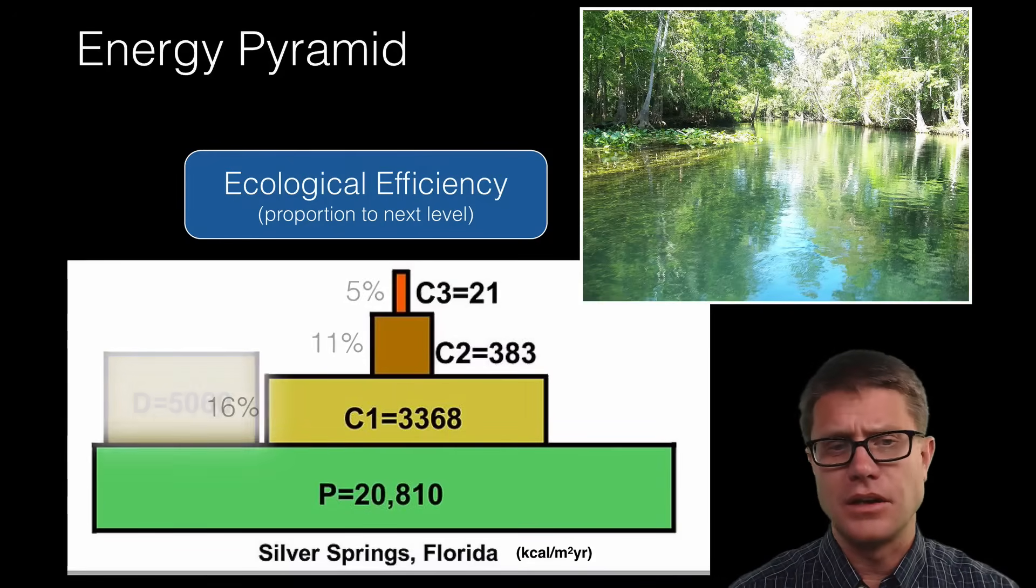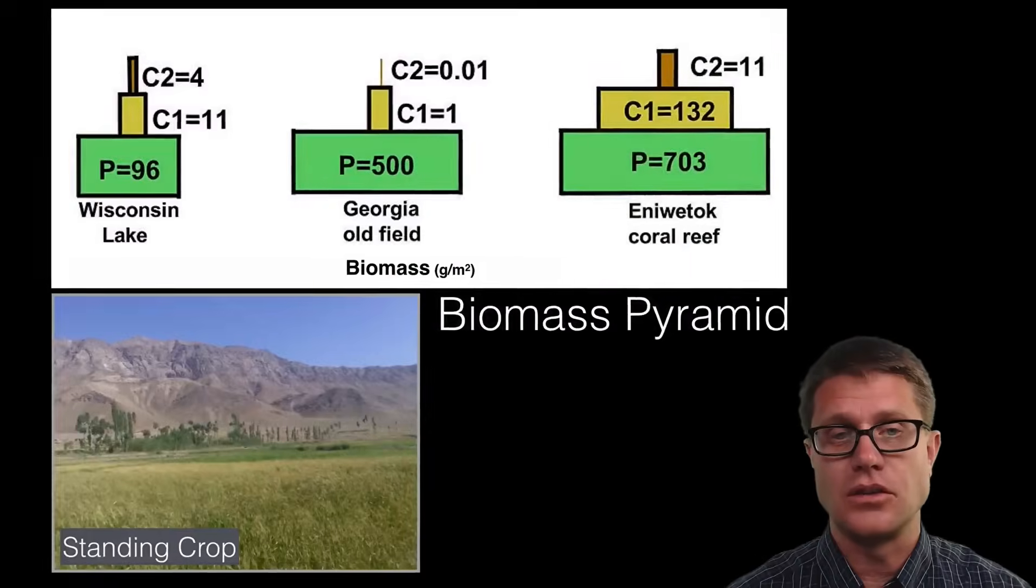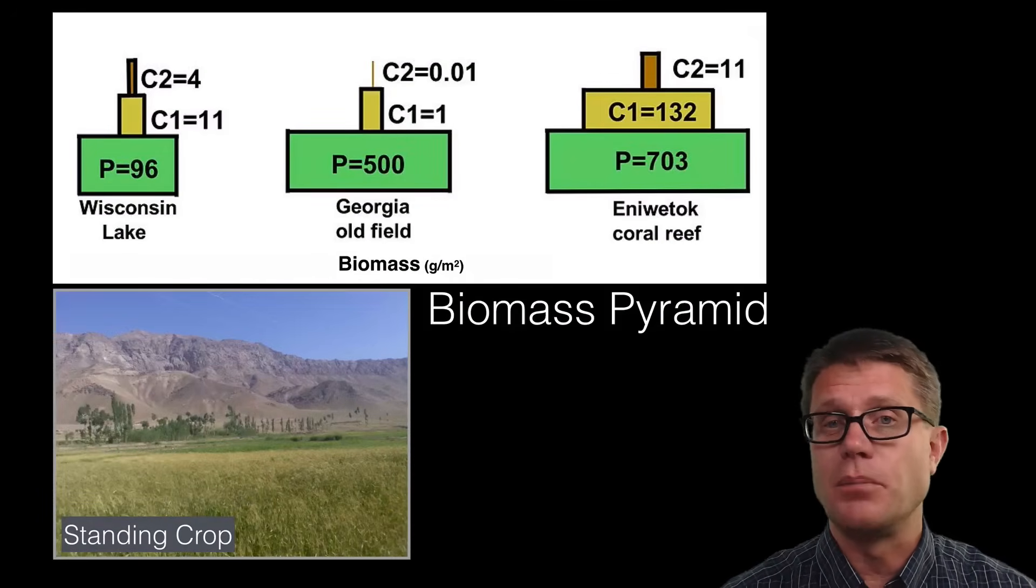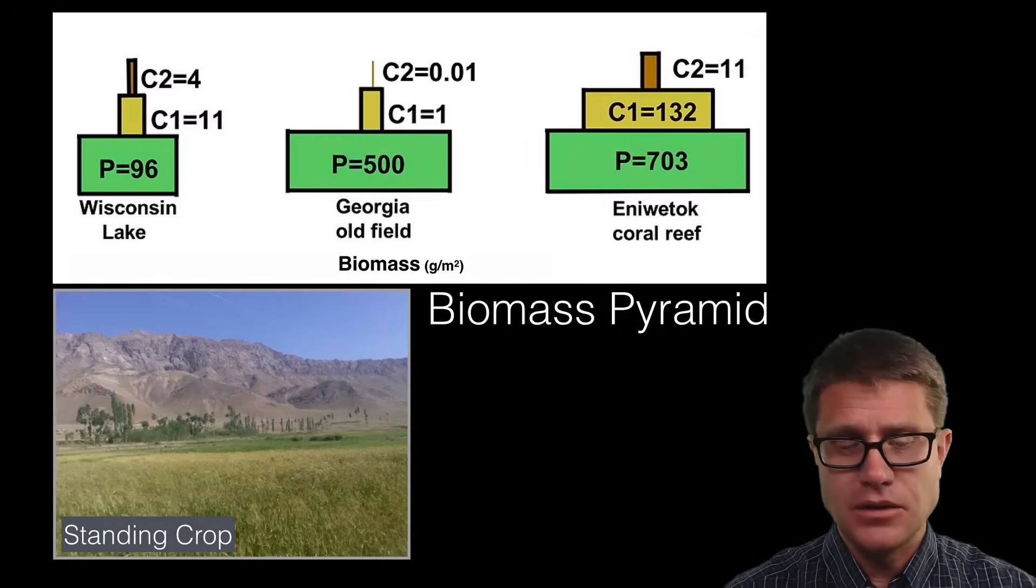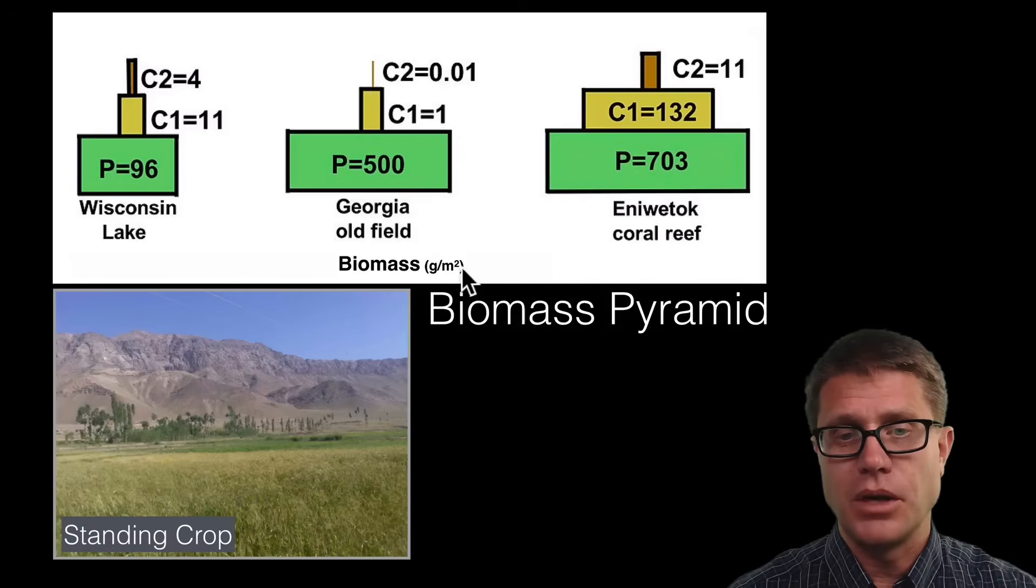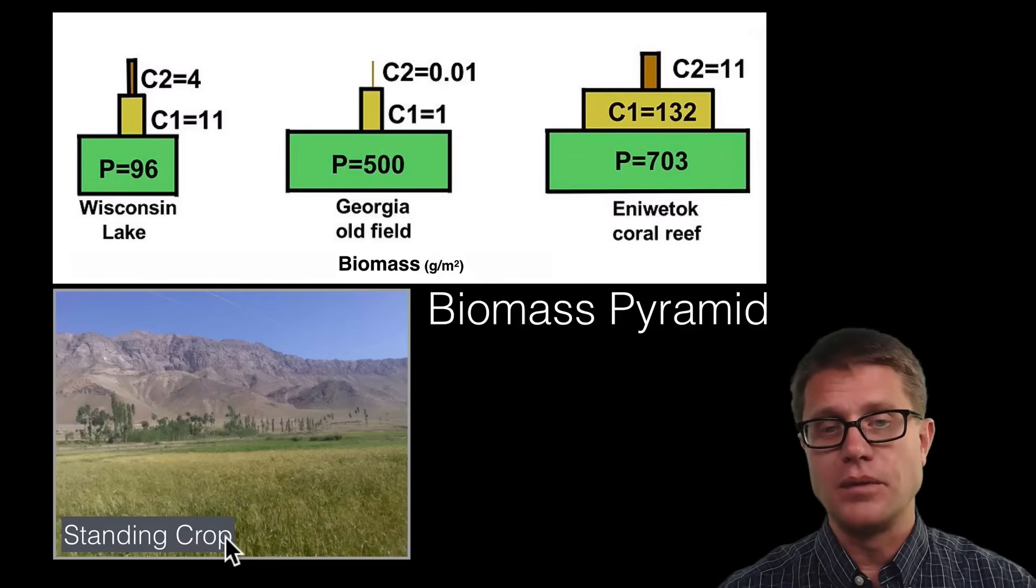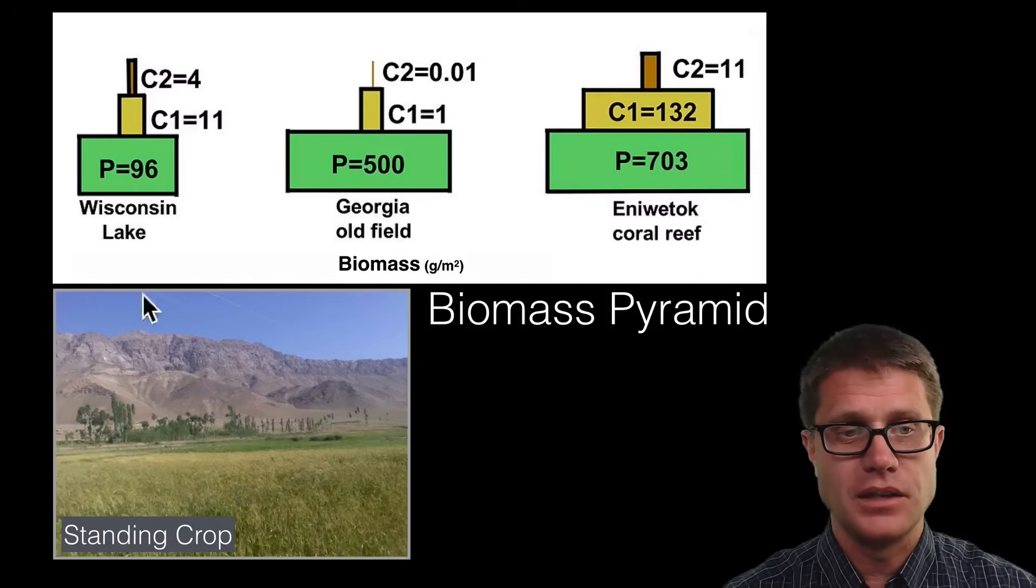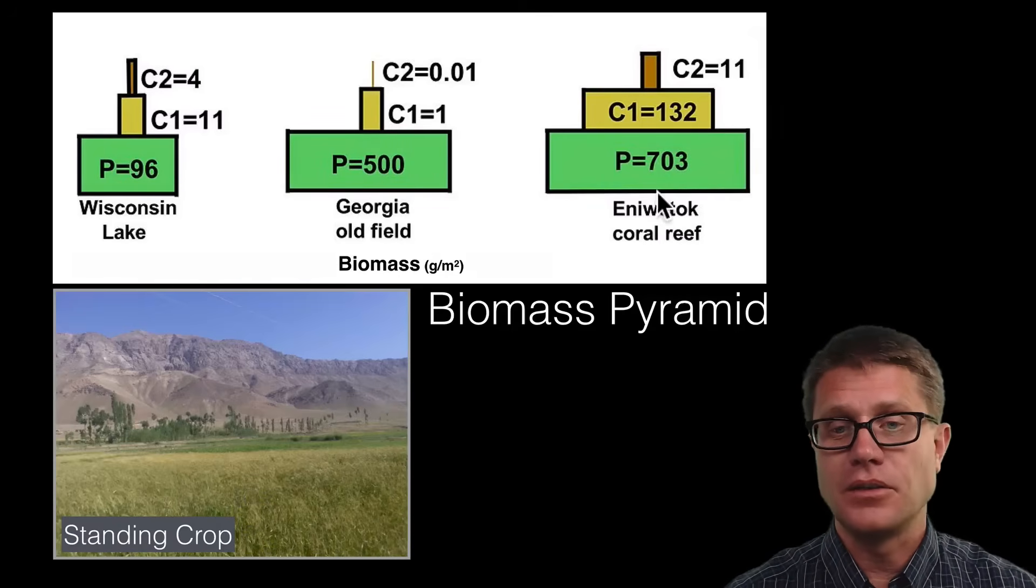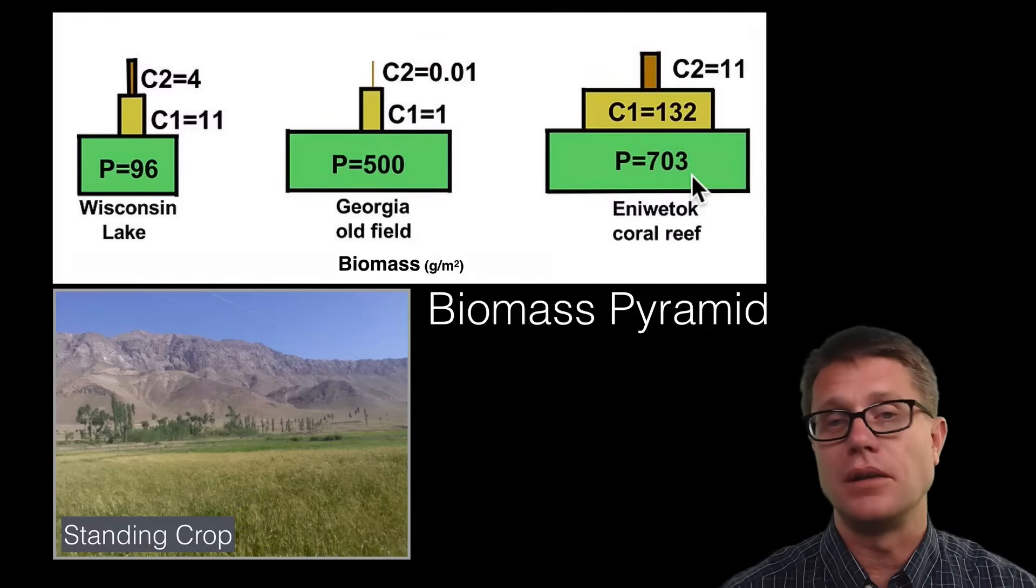Now what are we really missing on this energy diagram are the decomposers. They are going to make use of a lot of that energy as well. Another way to measure it is biomass. Just how much material is made. What is different here is that we do not measure it over a given period of time. We measure what is called standing crop. It is the amount that is there at one point in time. But you can see the same thing occurs. If we are looking at a Wisconsin lake or a field or a coral reef, the amount of biomass that we have at the producer level is going to be way more than we have at the levels above it.